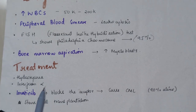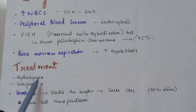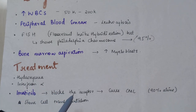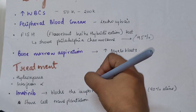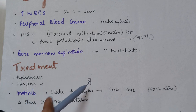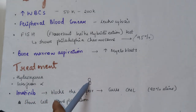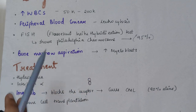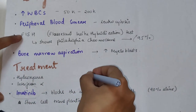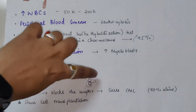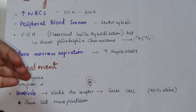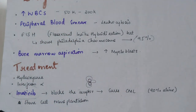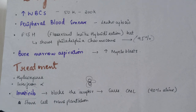For treatment, due to excessive platelet and other cell mass production, hydroxyurea and interferon alpha are used. There is also imatinib, which blocks the receptor — specifically, it blocks the Philadelphia chromosome from signaling, preventing further division. This way, imatinib does not allow the Philadelphia chromosome to activate, which may provide a cure for CML. Additionally, stem cell transplantation can be done so that proper cells are produced.